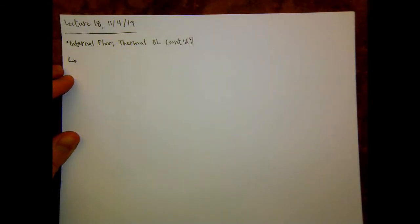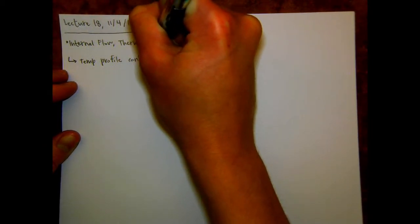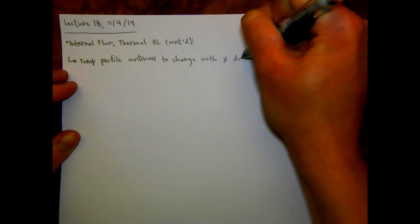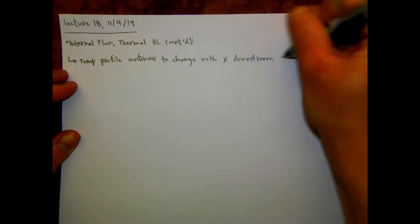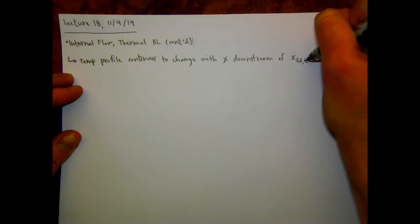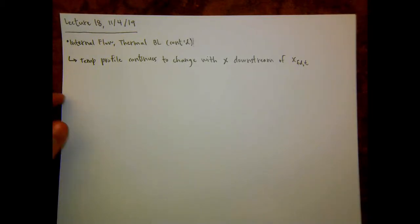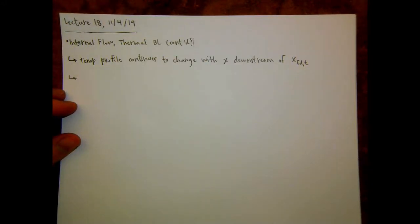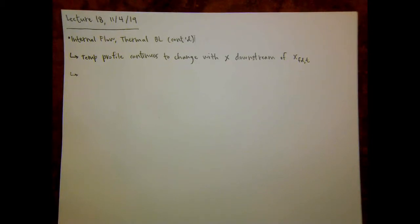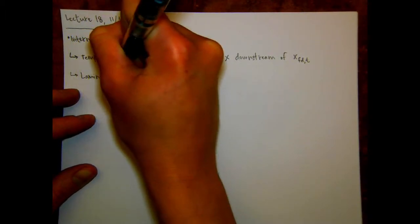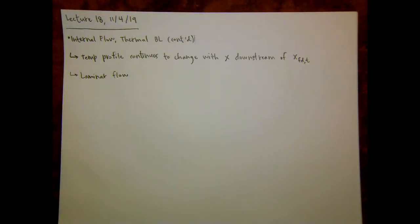So let's go ahead and write down that the temperature profile continues to change with X downstream of the location where it's fully developed — this X_FD,T. But we can still come up with expressions for the place where the boundary layers merge and the length of the entrance region. So just like for the velocity profile, having laminar flow or turbulent flow changes what the entry length is.